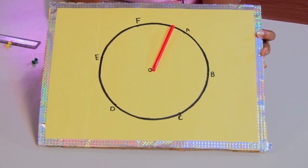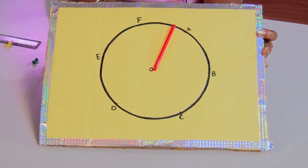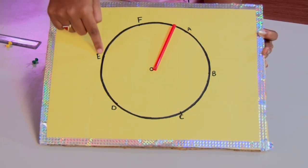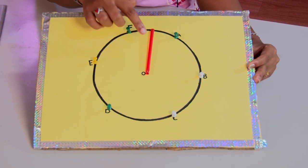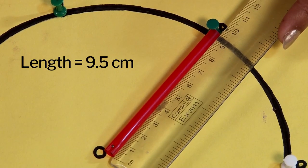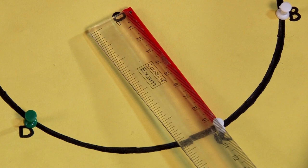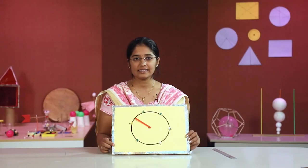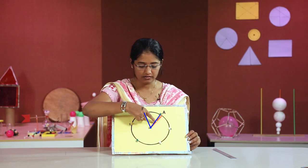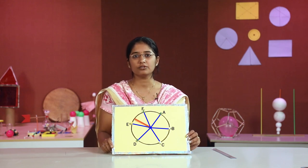We will try to understand what the radius of a circle is with the help of an activity. I have drawn a circle on the cardboard, and this is the centre of the circle. I will fix drawing pins at points A, B, C, D, E, and F on the circle. I will put the straw connecting point A to the centre and measure the distance — the length of the straw is 9.5 centimetres. Measuring at other points also gives 9.5 centimetres, so the distance from the centre to any of these points is equal to the length of this straw.